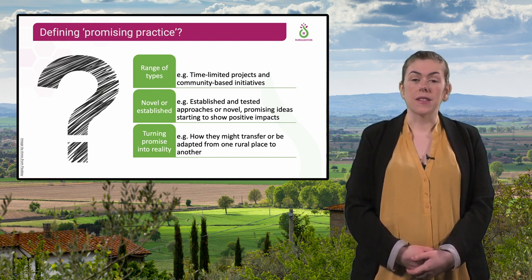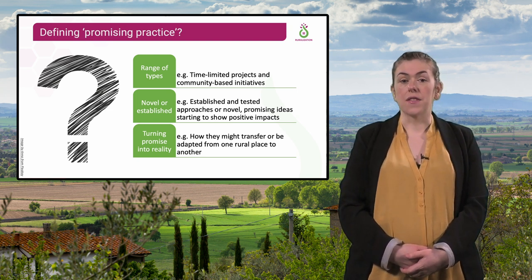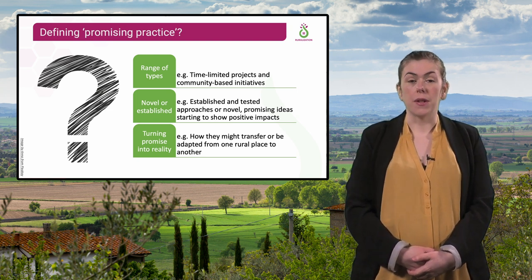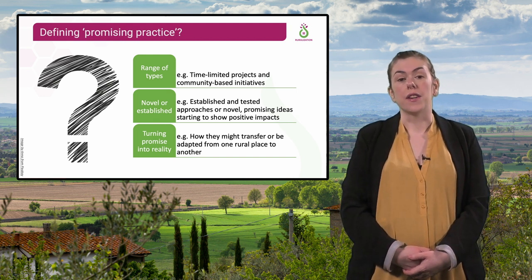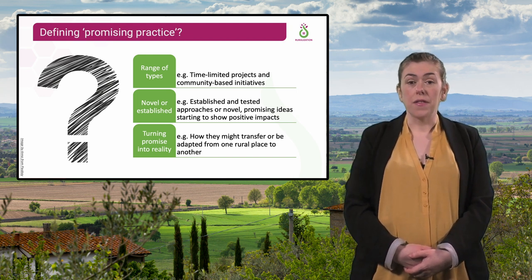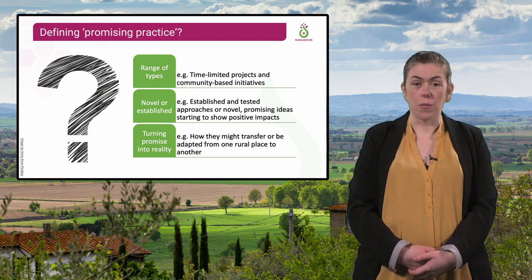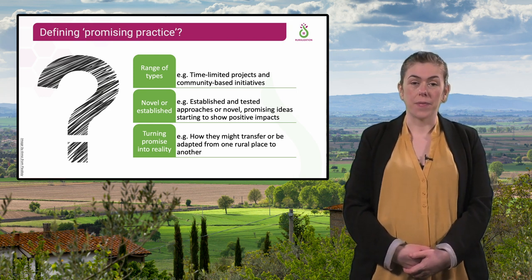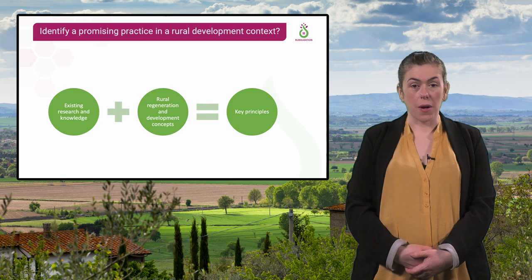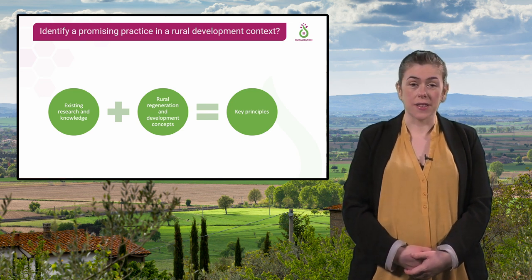They are also classed as promising because we first need to assess them to see if their promise can be realised. This might mean identifying, for example, if and how they might transfer or be adapted from one rural place to another. But how do we identify a promising practice in a rural development context?